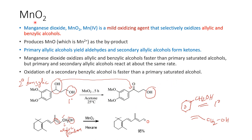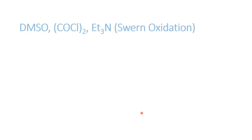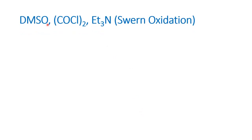In total, what do we see about MnO2? MnO2 is a mild oxidizing agent. It selectively oxidizes allylic and benzylic alcohols only — either to an aldehyde or to a ketone based on whether the carbon is primary or secondary.